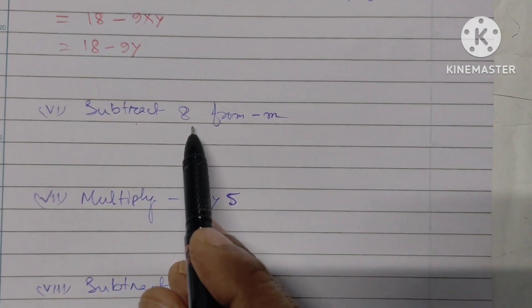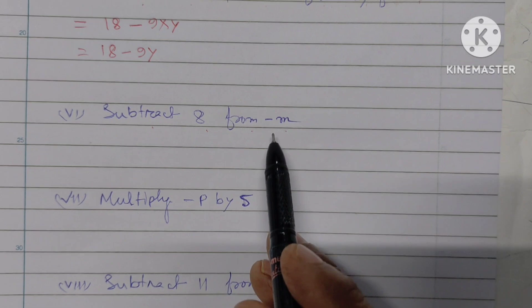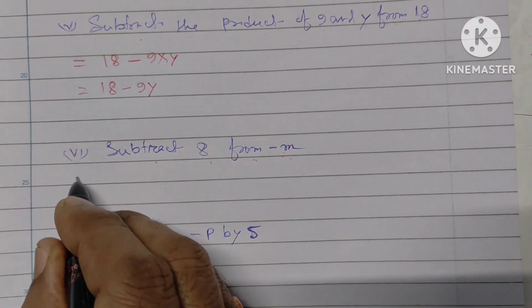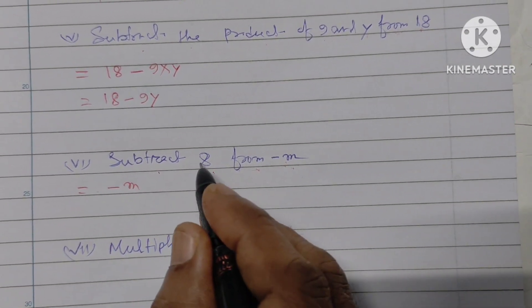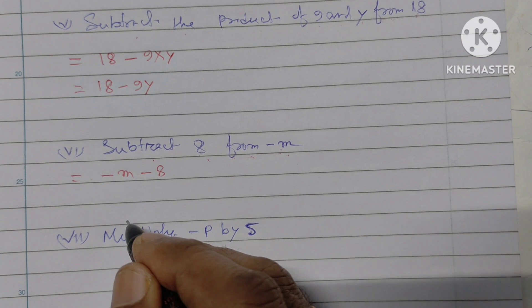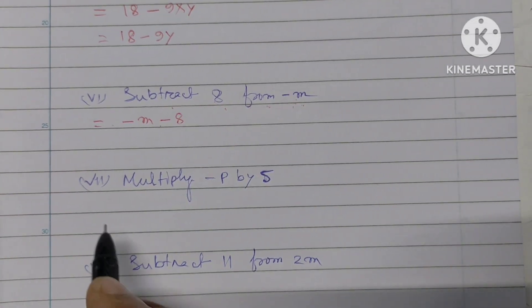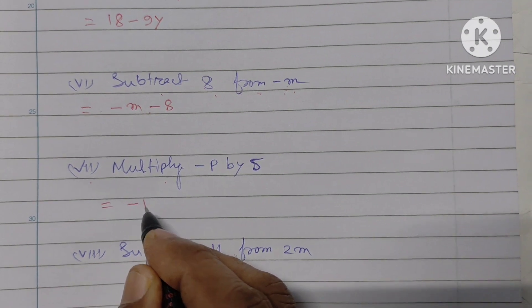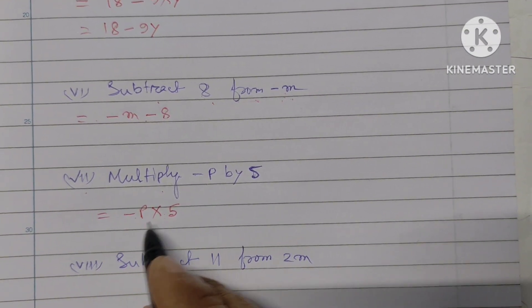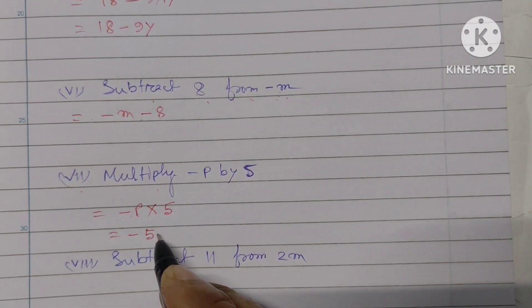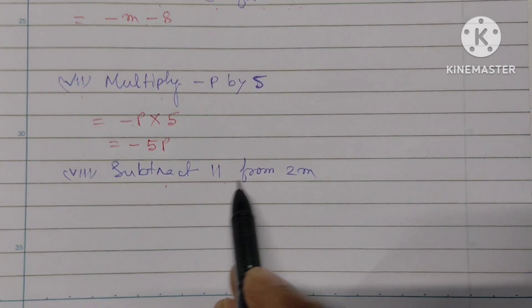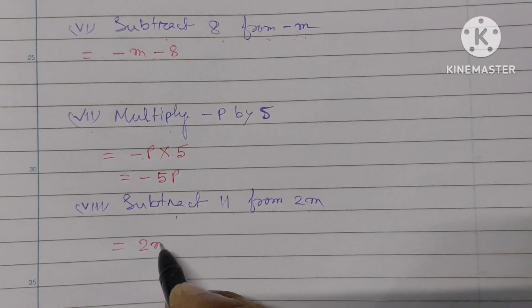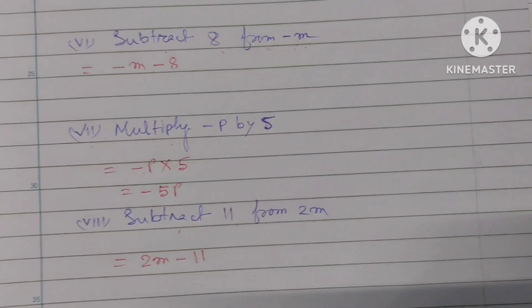Next: subtract 8 from minus m, that gives minus m minus 8. Then: multiply minus p by 5, that gives minus 5p. Then: subtract 11 from 2m, that gives 2m minus 11.